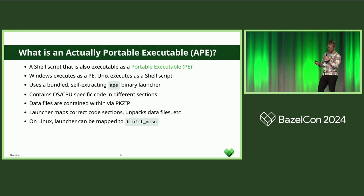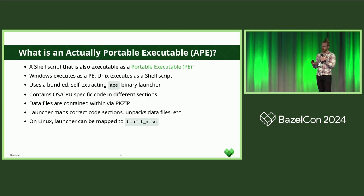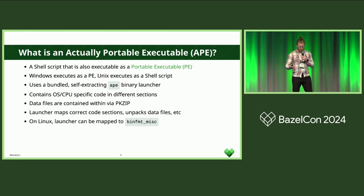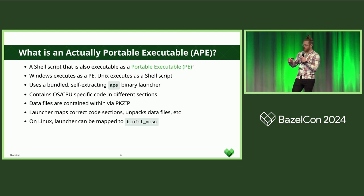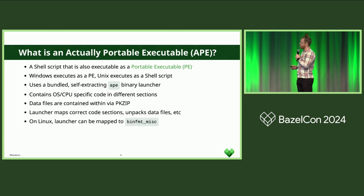What is an actually portable executable? It extends the portable executable format. On Windows it just runs as a PE. But on Unix it runs as a shell script that extracts an APE binary launcher, and then the APE binary launcher figures out the correct OS and CPU-specific code to map into memory. Crucially, they can also store data files within the same binary using pkzip, because the pkzip header is at the end of the binary. For example, Python can store its entire standard library within the binary. The APE launcher will unpack those files and run the code with those data files. On Linux, you can map the APE launcher to binfmt_misc and it will avoid the self-extracting part.